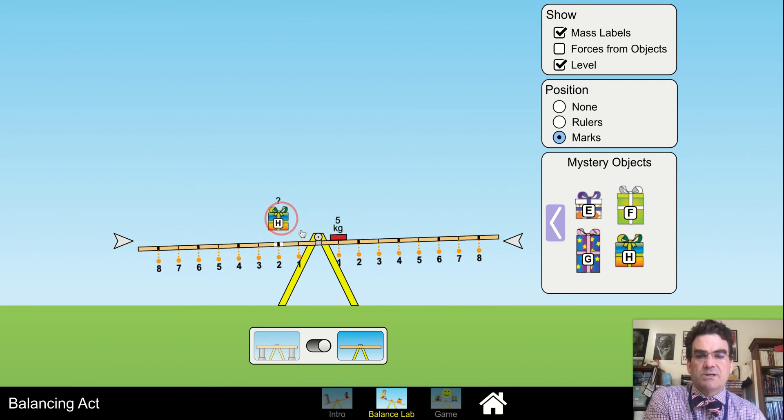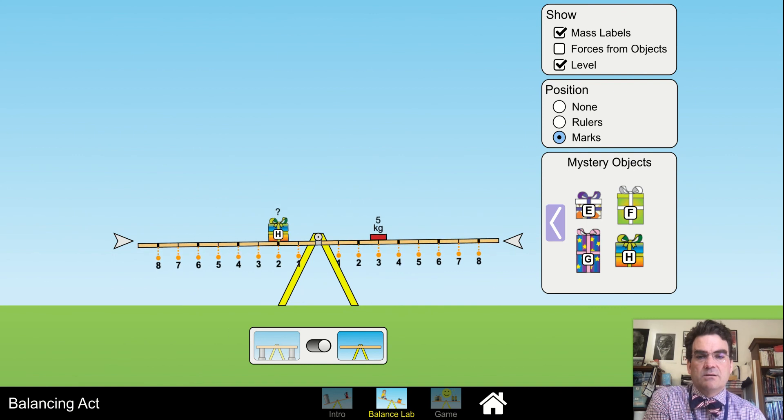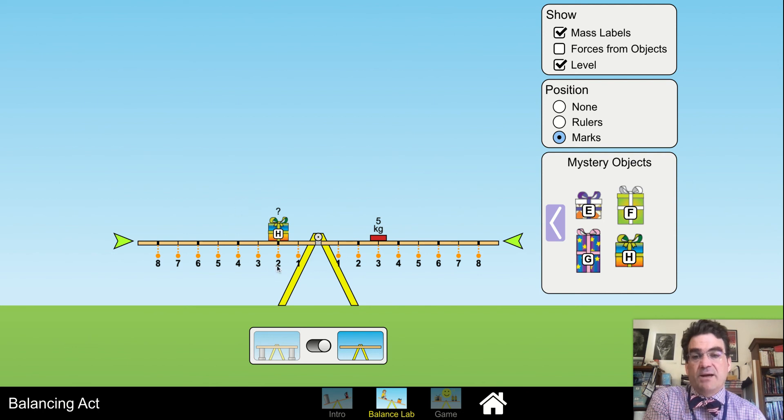Why don't we bring this to a 2? And maybe we bring this to a 3. Let's see if that works. That balances us out. So we have 3 times 5 is 15, a torque of 15 on the right. And then we must have a torque of 15 on the left. So 15 divided by 2 is 7.5 kilograms, a little bit of a fraction there. I hope this was helpful in doing part 3 mystery objects of our Balancing Act lab. Thank you.